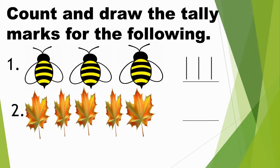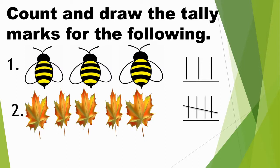In the second example we have leaves. Let's count how many leaves there are: 1, 2, 3, 4, 5. There are 5 leaves. So how many tally marks will I draw? Yes — 1, 2, 3, 4, and 5. I will draw a cross line to make a group of 5.